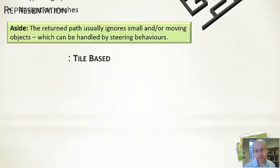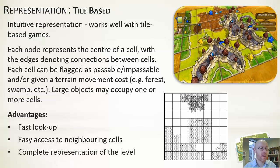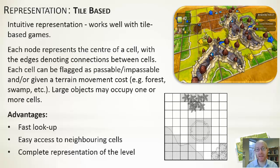Grids are our first form of representation — a tile-based representation. Here we assume the level is divided into equally sized cells, which could be hexagonally or square-based. Each tile or grid element is connected to ones around it, so we can move north, south, west, and east. Certain cells will be passable and others impassable. We can also assign movement costs to cells to model different types of terrain. It's fast to look up your location, easy to check neighboring squares, and it provides a complete representation of the level.